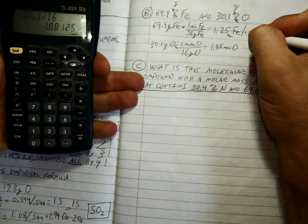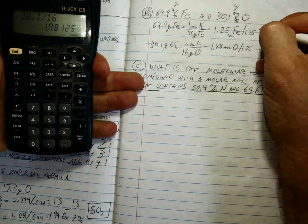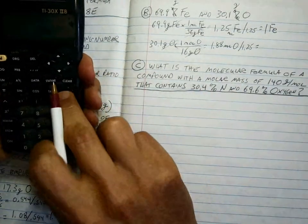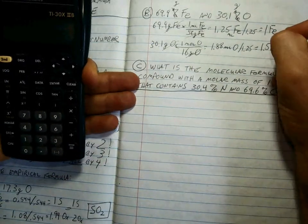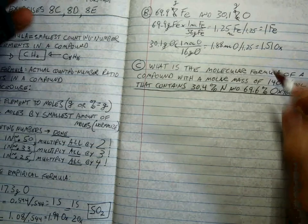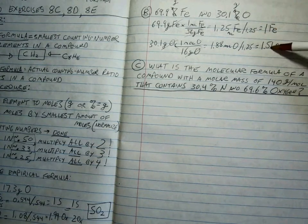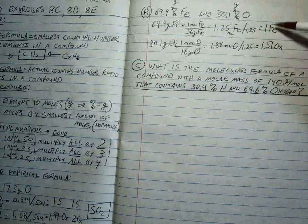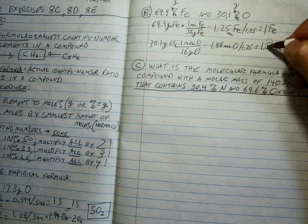Now we have to normalize by dividing by the smallest number. So what do we end up with here? 1 Fe, 1.88 divided by 1.25 is 1.51 oxygens. Okay. And if you notice, that's essentially a ratio of 1 to 1.5, which is not the same as 1 to 1 or 1 to 2.